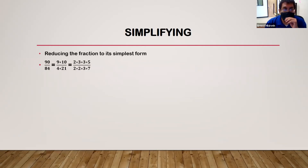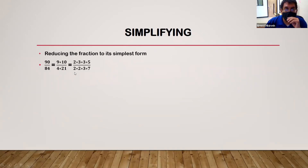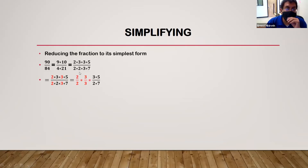Simplifying requires reducing the fraction to its simplest form. For example, 90 over 84: we break it down so we have 9 times 10 over 4 times 21, and further to the simplest form: 2 times 3 times 3 times 5 over 2 times 2 times 3 times 7. I've color-coded it so we can identify which factors to cancel. The 2 and 3 that appear in both numerator and denominator each become 1 over 1 and are cancelled out.